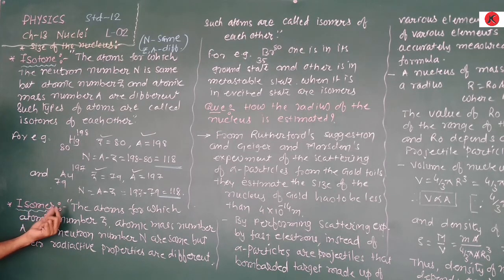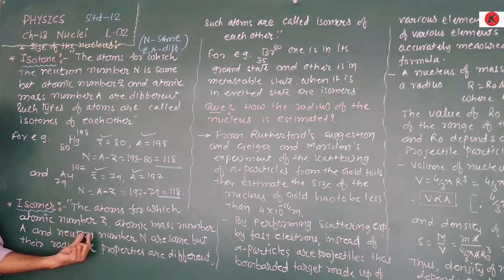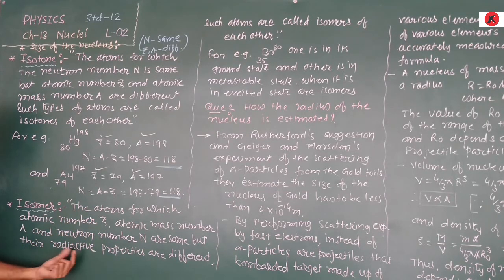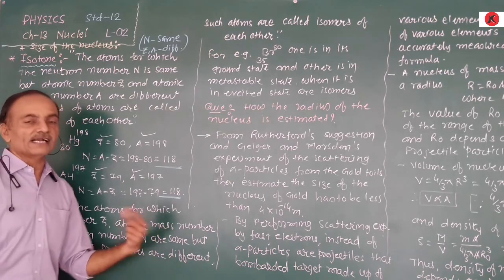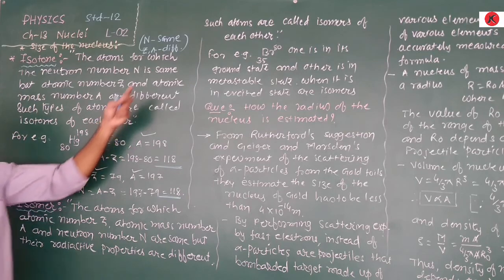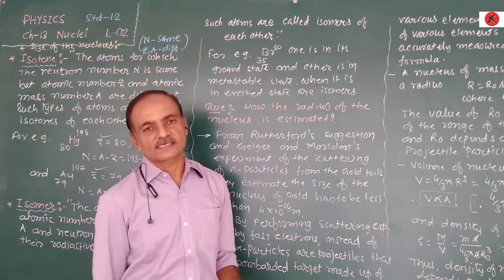After that, isomer. Atoms for which the atomic number Z, atomic mass number A, and neutron number N are all the same — that means Z, A, N are the same — but the radioactive properties are different. These atoms are known as isomers of each other.